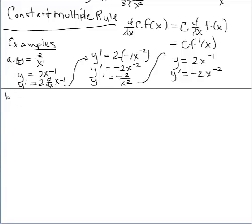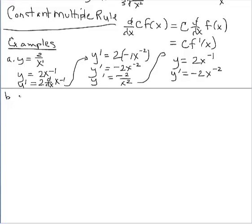Calling the last example A and this one B, let's continue looking at the constant multiple rule. Sometimes it's helpful to use that rule and sometimes not so much. Consider f of t equals 4t squared over 5. What we could do is pull the 4 fifths out in front and then just differentiate the t squared.